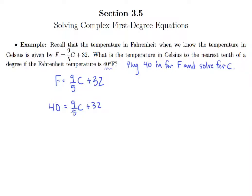So we have 9 fifths times C and then we're adding 32. Which do we take care of first? Well we take care of the addition first, right? Remember reverse the order of operations. So we'll subtract 32 from both sides. We'll get 8 equals 9 fifths C.